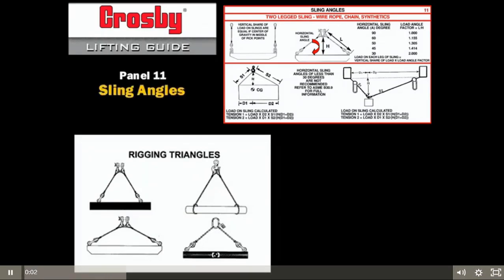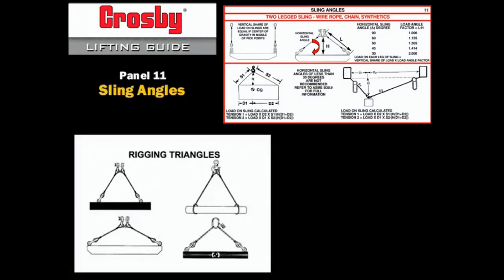In most lifts, only a single hook is available. This means that multiple leg slings must be collected at the load hook. When this is done, we form what we call a rigging triangle.